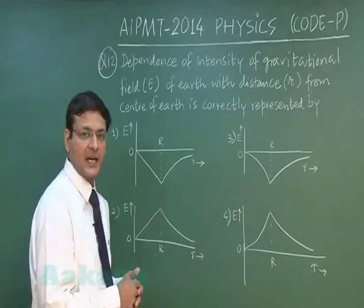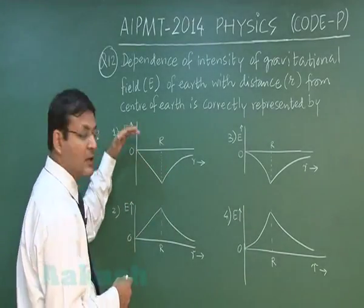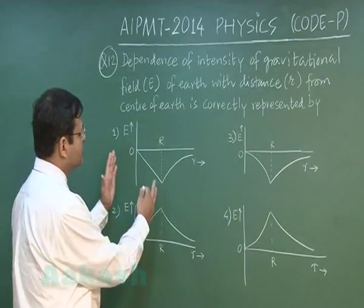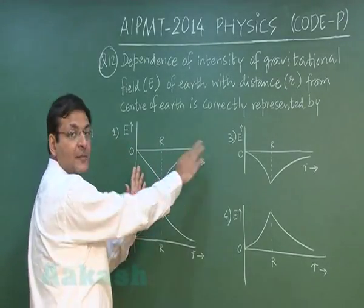Not only that, since the force is attractive, that is why the field is also plotted on the lower side. Lower side means on negative side. So you have to see that up to the radius of the earth it should be a straight line and then after that 1 by r square variation.